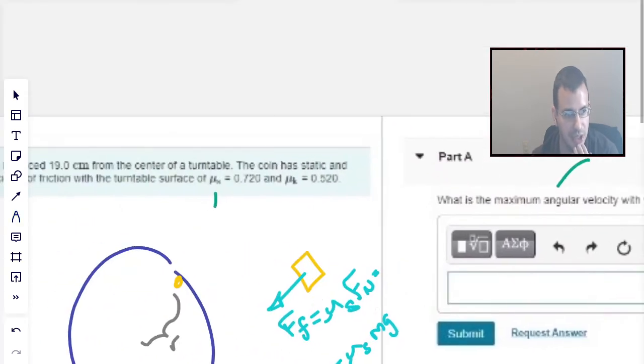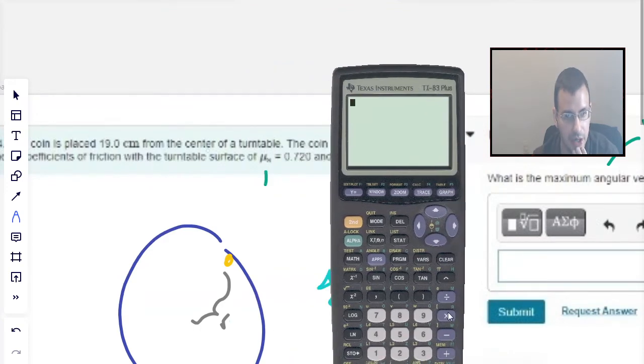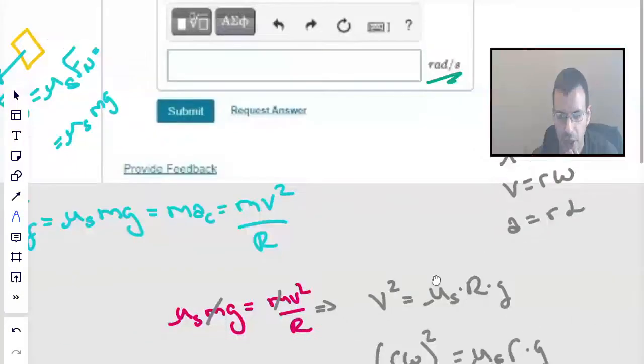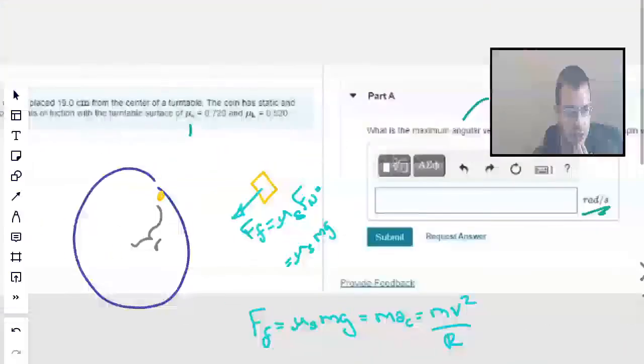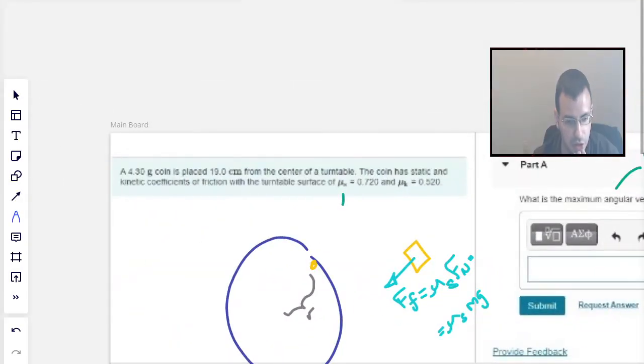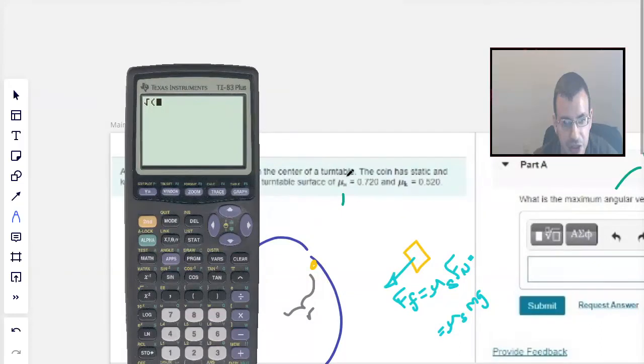Alright, so now, get the calculator. Calculator. On, what do we want? Coefficient of friction, gravity divided by radius. So, let's see here. Second square root of quantity. Coefficient of friction. We'll use static, so it'll be 0.72. That's pretty good.